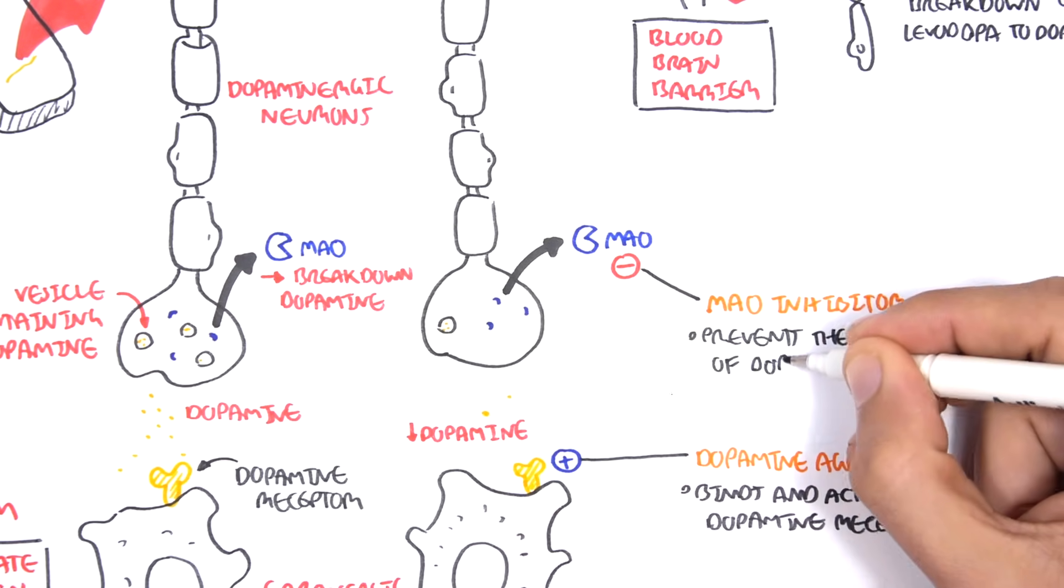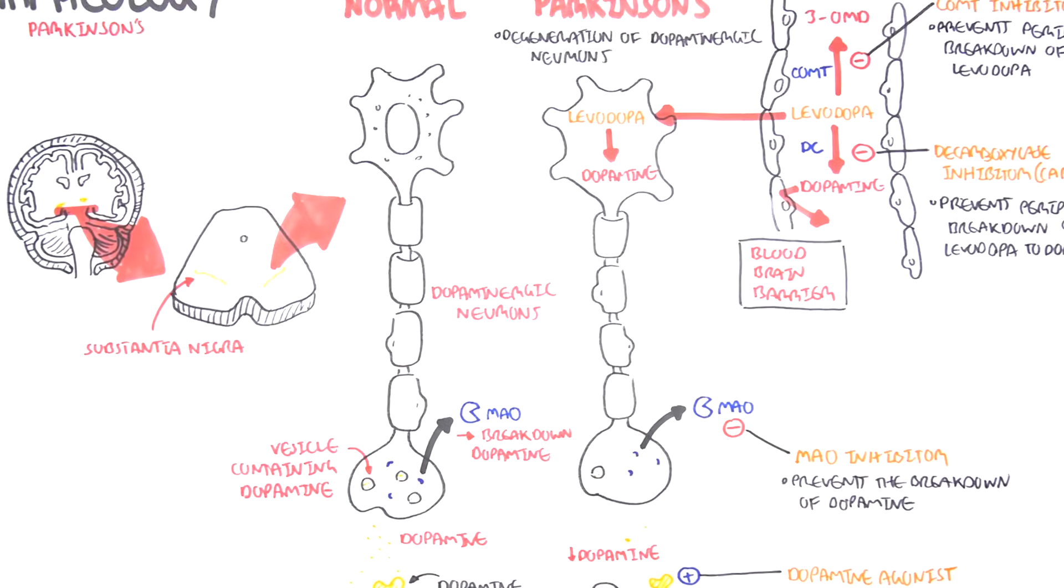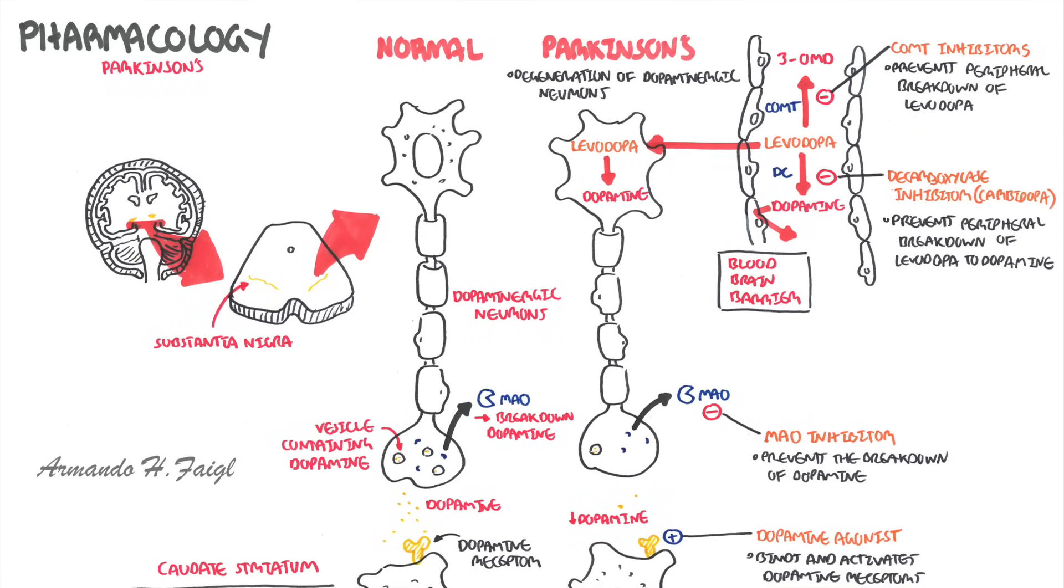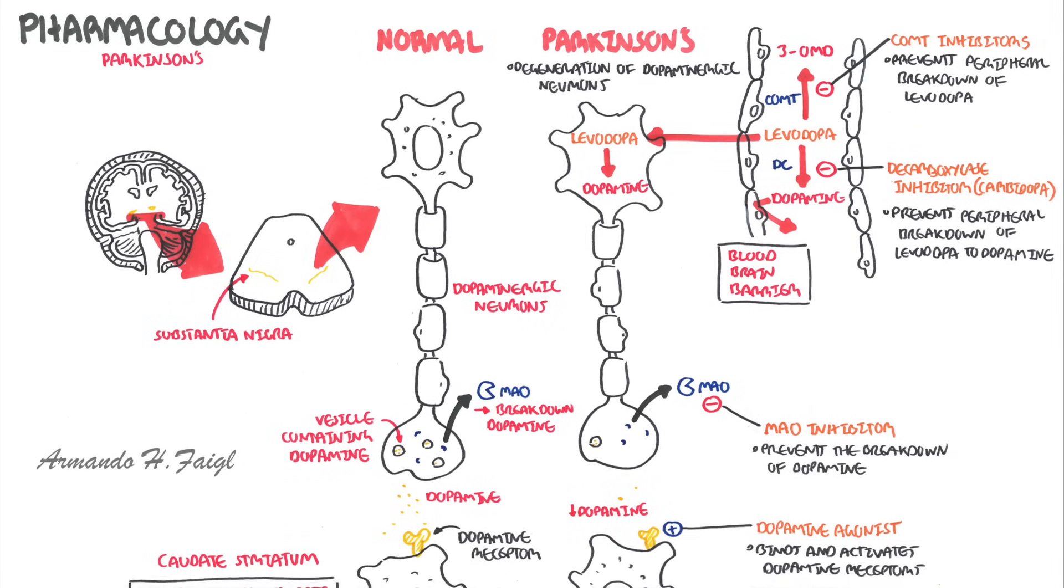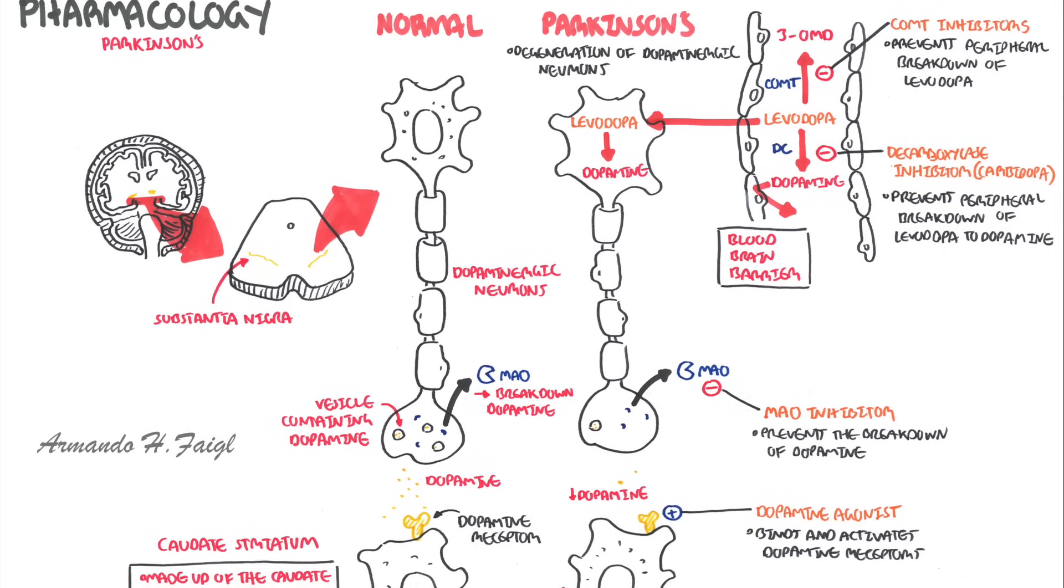I hope that made sense. The main drugs used are levodopa, which has to be administered with the peripheral dopamine decarboxylase inhibitors such as carbidopa, and then you can also have the dopamine agonists or the monoamine oxidase inhibitors.